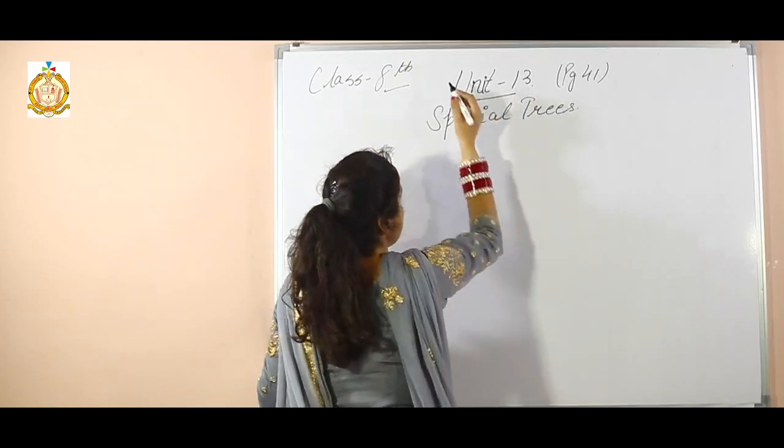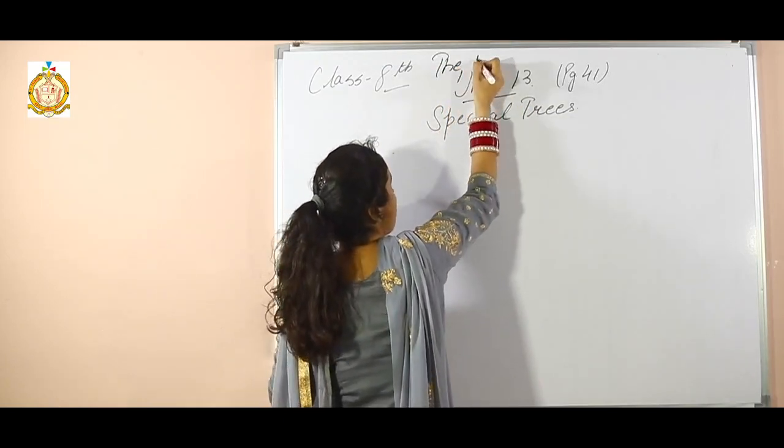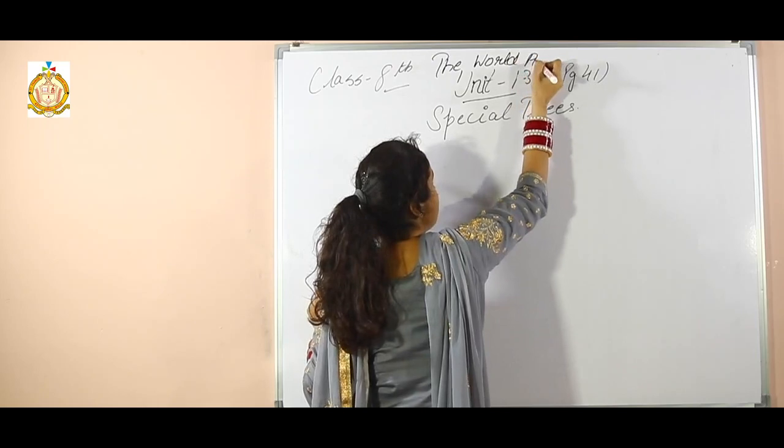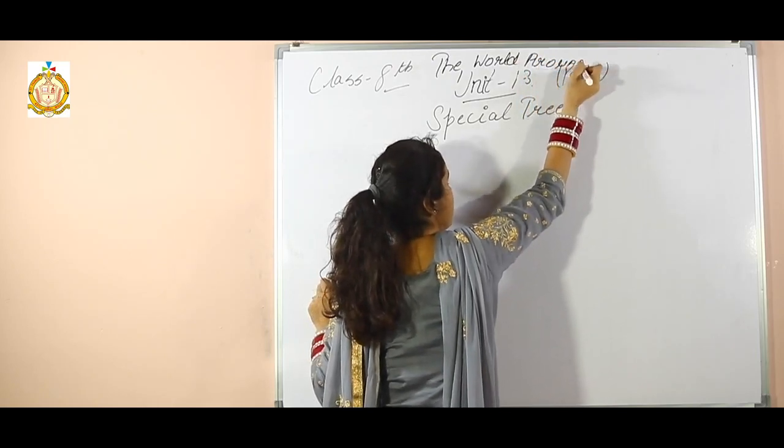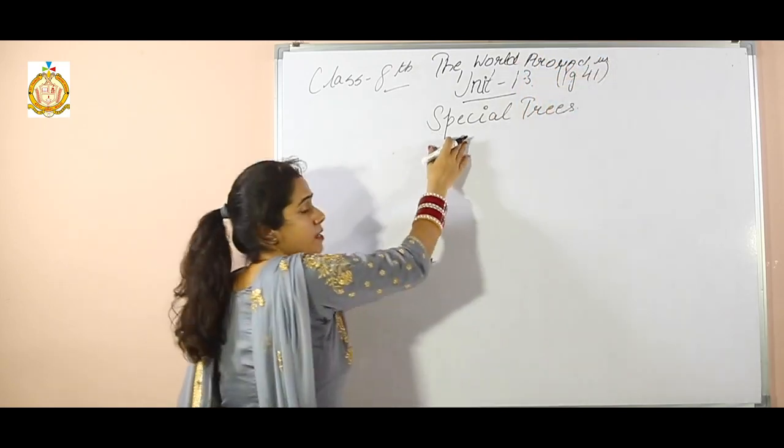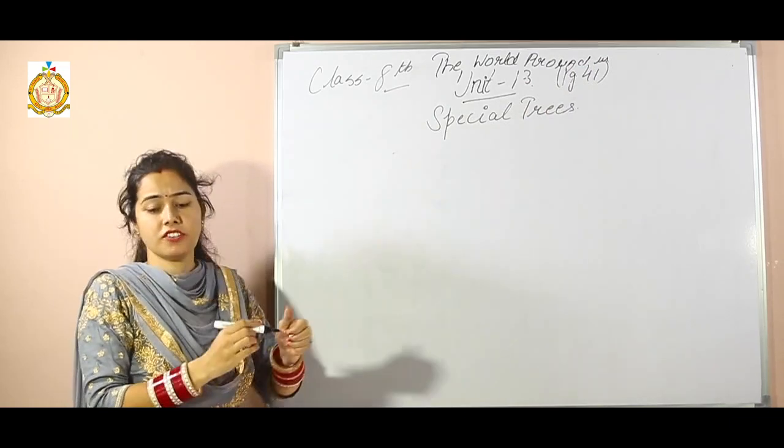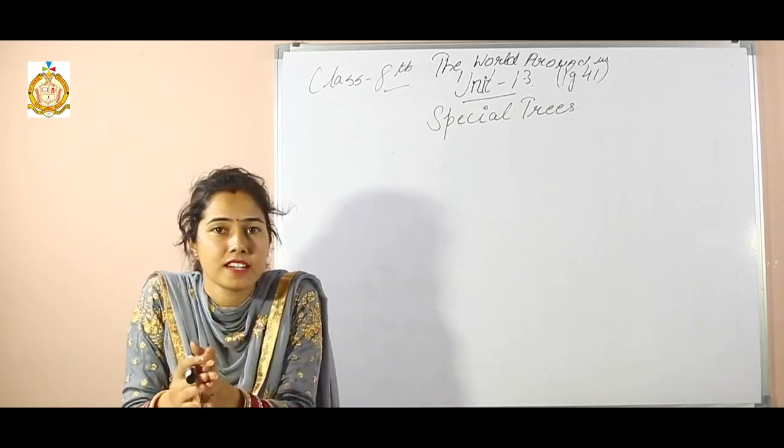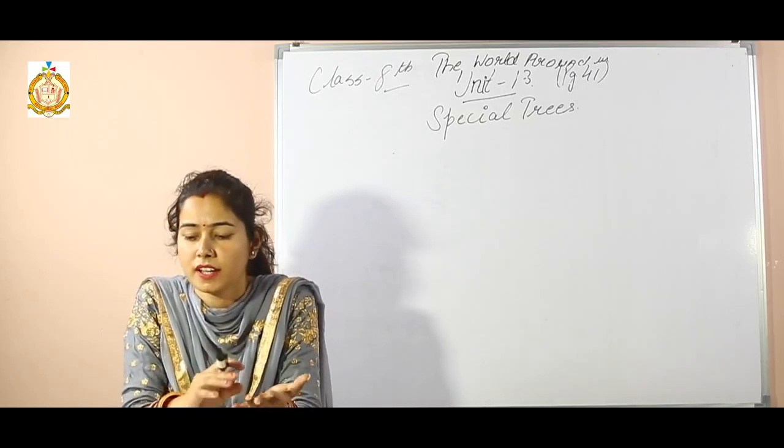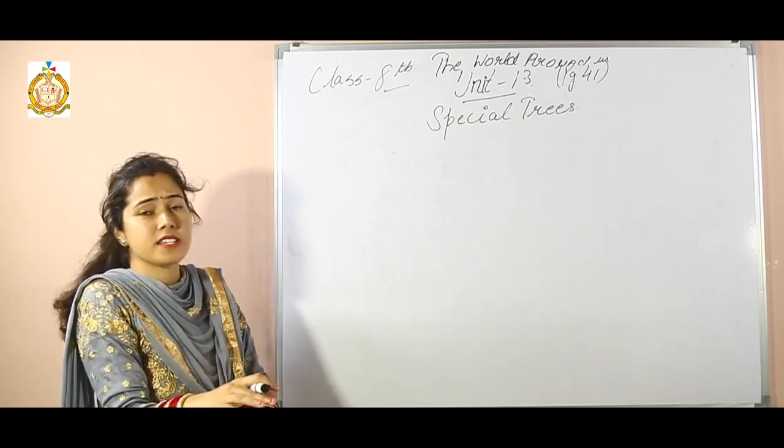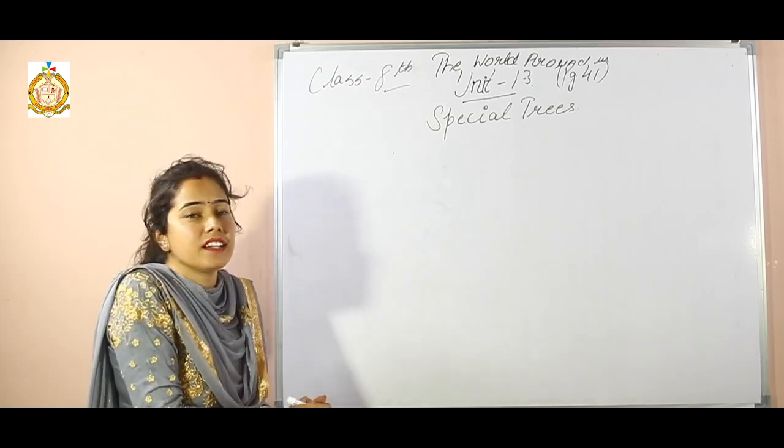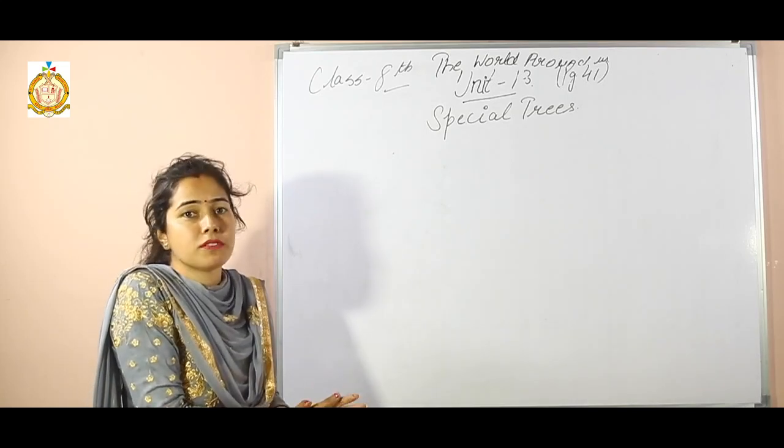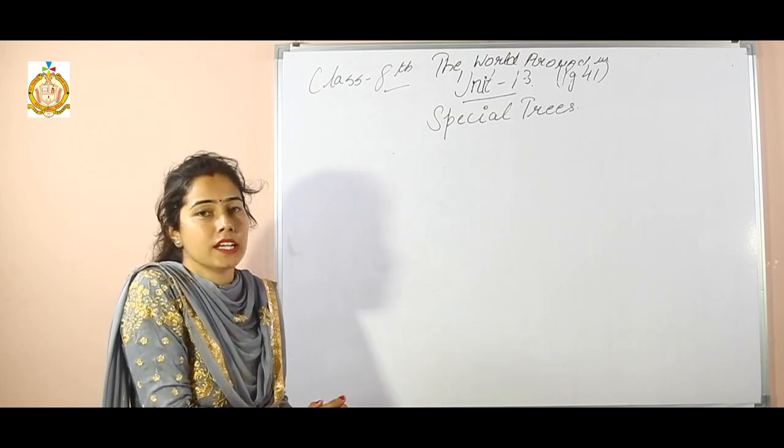Unit 13 name is the world around us. The sub-chapter is special trees. First of all, what are trees? Trees are green plants which give us flowers, fruits, and help us in many ways. For example, trees give us oxygen so we can take pure air.